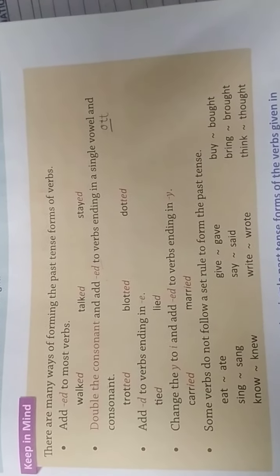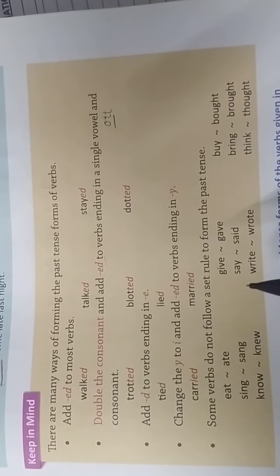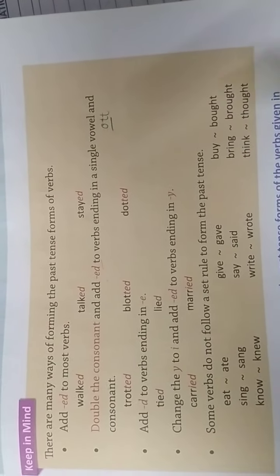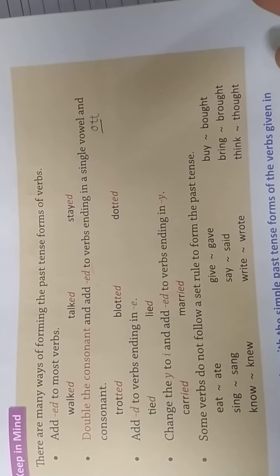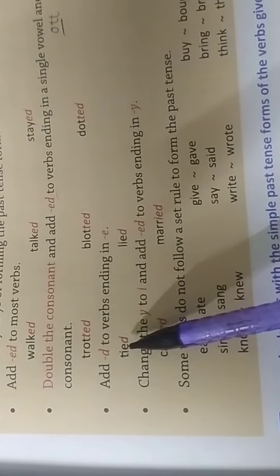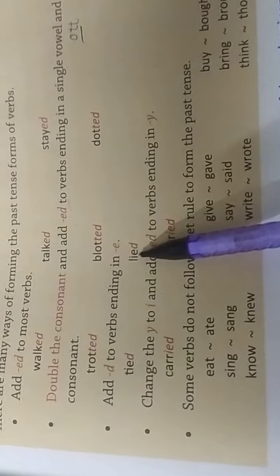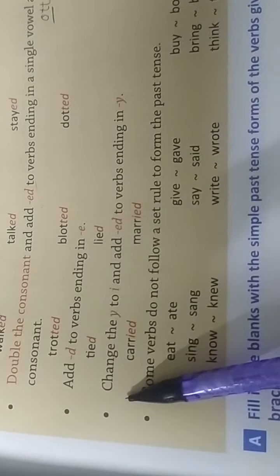For verbs that already end in 'e', we do not add -ed; instead we just add 'd'. Examples include: tied, lied.